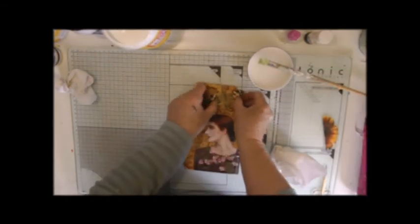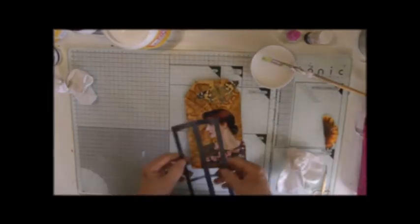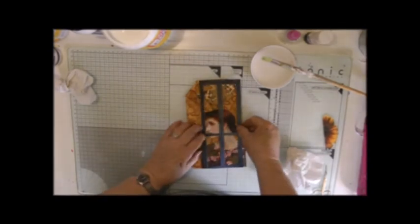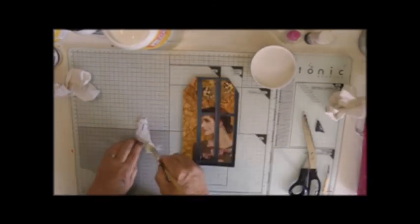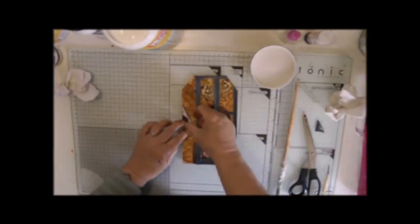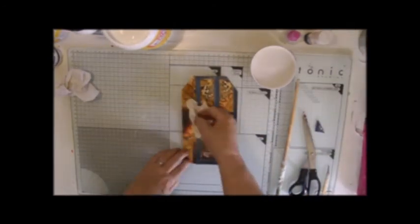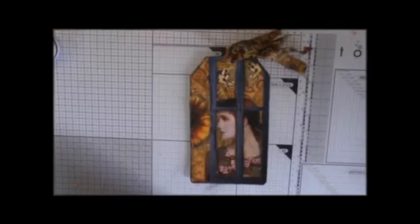So I'm adding collage with Mod Podge again, several different pieces, some of them which overlap. And then when I've done this, I just do the same as I've done before. I add some colour, and I do some Stabiloing.